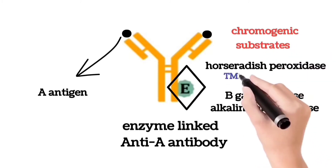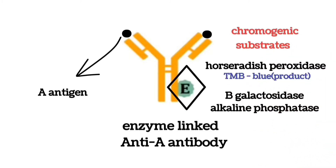For example, TMB (tetramethylbenzidine), which is a substrate of horseradish peroxidase, gives a blue color when converted into the product. This color intensity can be measured by a spectrophotometric method.